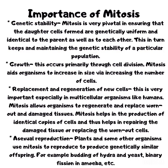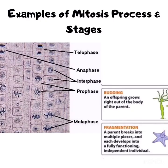Mitosis is very important in living organisms. It promotes genetic stability, growth, and replacement and regeneration of new cells. It is also important in asexual reproduction. Here are some examples of mitosis in plants — we can see mitosis in the root tip showing its various phases. Mitosis can also be seen in budding, fragmentation, and binary fission.